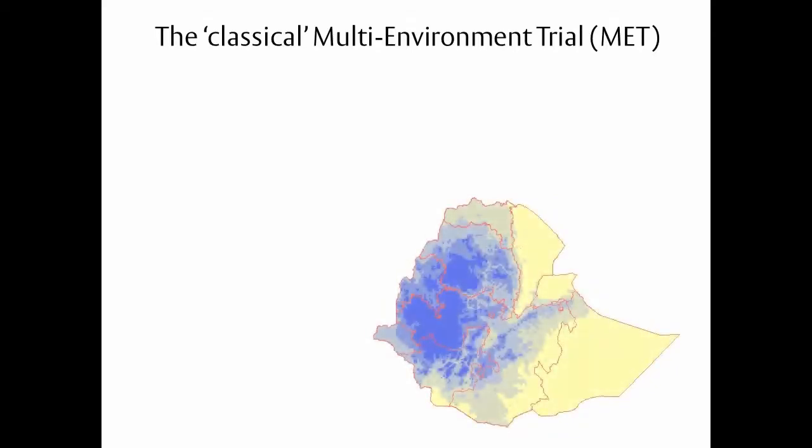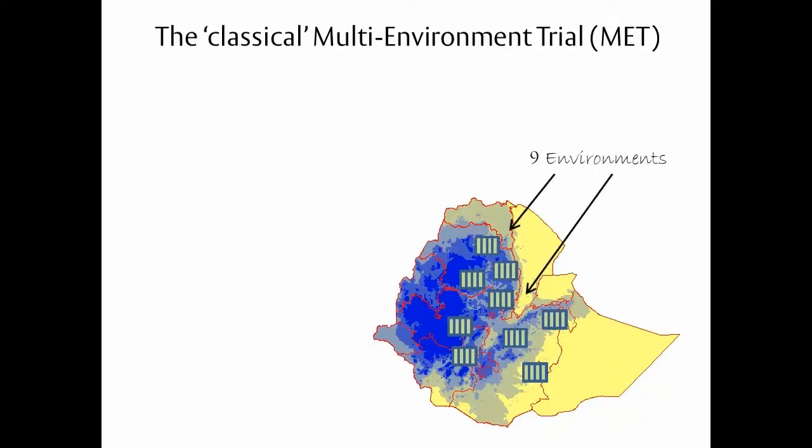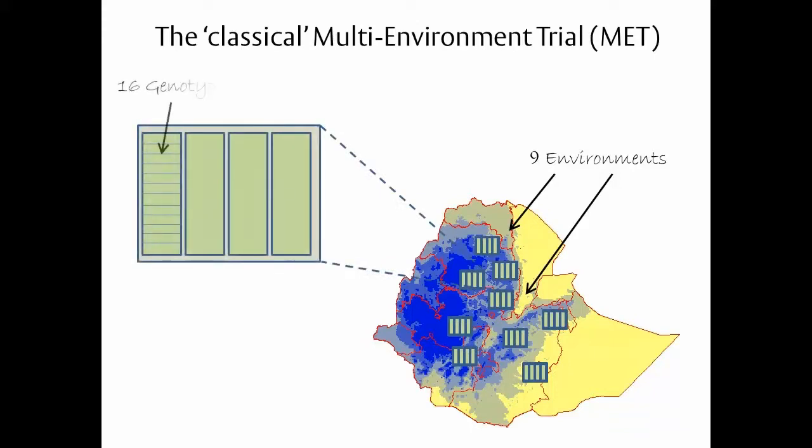The classical breeder's tool to measure and understand genotype-by-environment interaction is a multi-environment trial. Here I've represented one schematically. Nine environments were selected, represented here as points on a map of rainfall in Ethiopia. At each location, 16 varieties or genotypes G were compared in a standard randomized block design and crop production was measured.